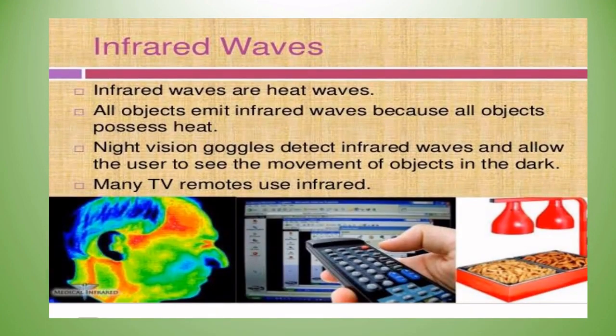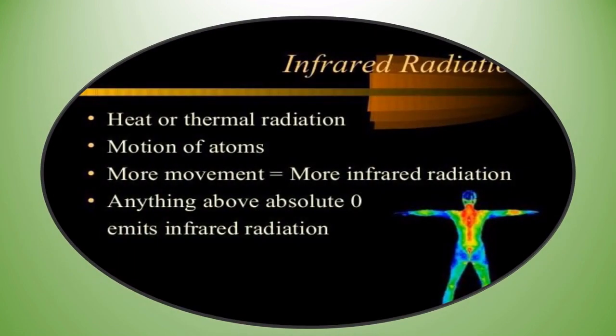Infrared waves are heat waves. All objects emit infrared waves because all objects possess heat. Night vision goggles detect infrared waves and allow the user to see the movement of objects in the dark. Many TV remotes use infrared. In thermal imaging, the red region is the hottest and the blue region is the coldest. Heat or thermal radiation results from the motion of atoms — more movement equals more infrared radiation. Anything above absolute zero emits infrared radiation.